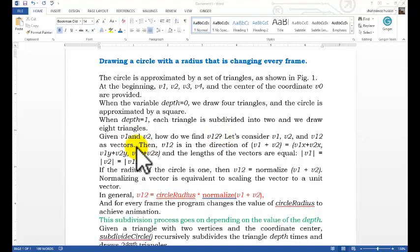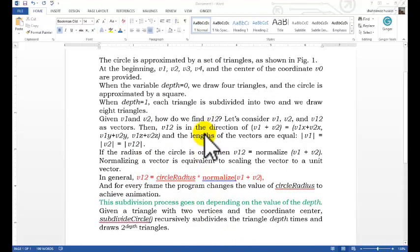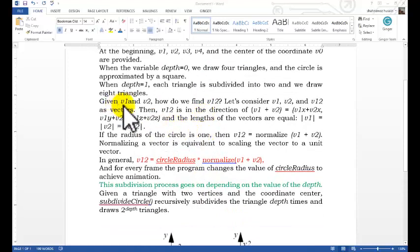Now we are using the normalization given v1 and v2. How we will get the triangle v1, that is this one. For this purpose we are having v1 and v2. How can we do it? We are using the normalization vector. What is v1? It is actually v1 plus v2, that is v1x plus v2x, v1y, v2y, v1z and v2z. And the length of the vector are equal to the modulus of v1 equal to v2 equal to v12.